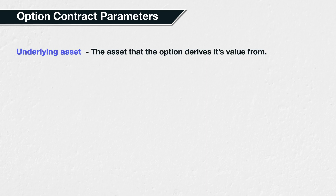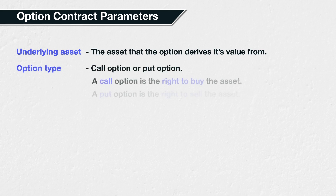When looking at an option contract there will be five main parameters to consider. The first is the underlying asset — the asset that the option contract derives its value from. In the example from the previous lecture this would be silver, but this can just as easily be Bitcoin, another currency, or stocks.